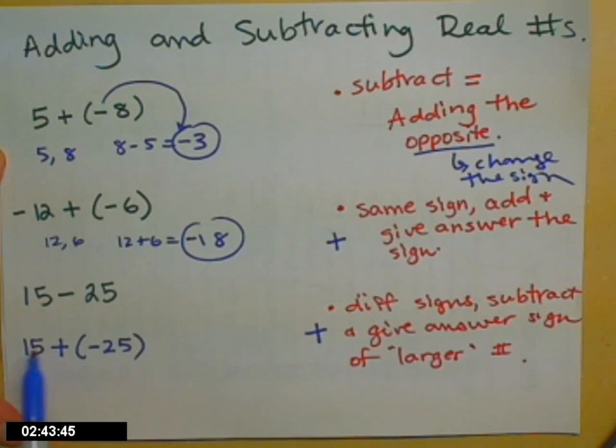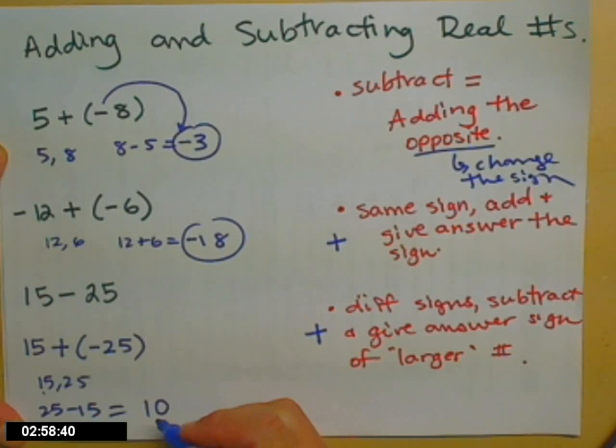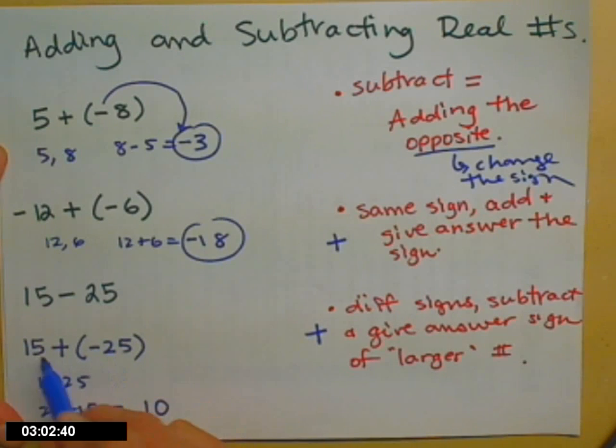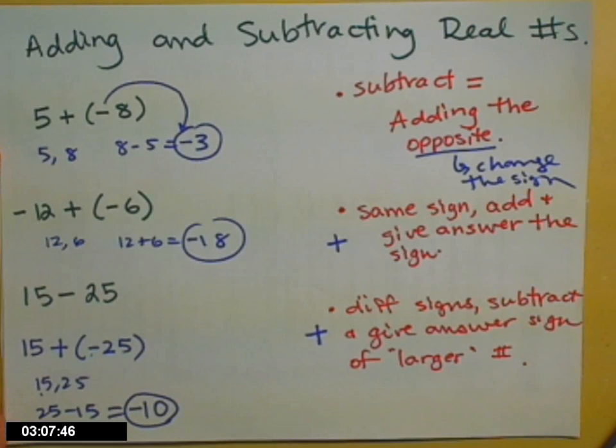So now I'm adding two numbers, different sign. So what I do is I take the absolute value, make them both positive. Subtract smallest from largest. 25 minus 15 is 10. And then I'm going to give my answer the sign that the larger number had. So 25 is bigger than 15. 25 is negative. So my answer is negative 10.